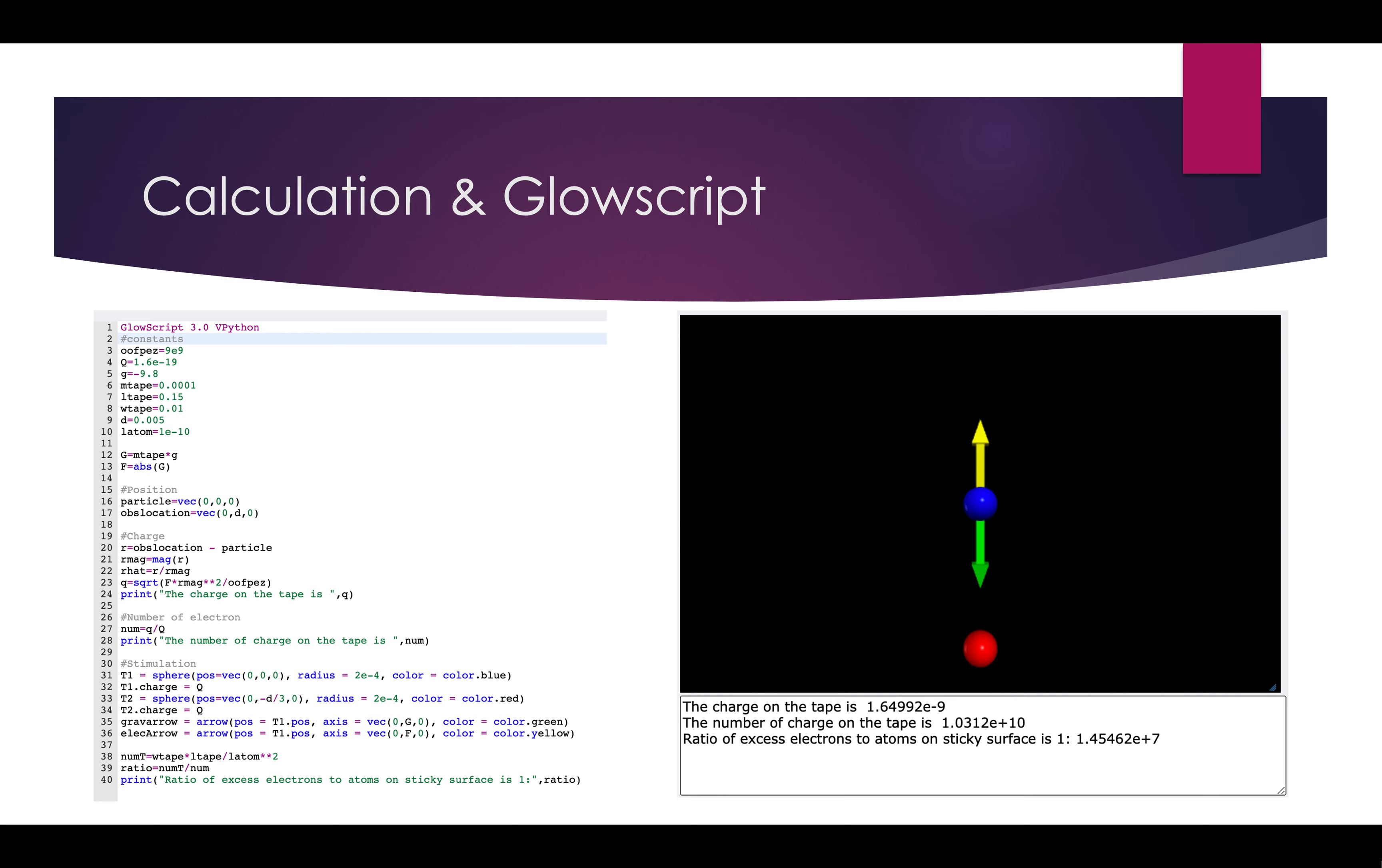The reason I use the position vector as 0 and negative D divided by 3 and 0 for T2 is because I want to make the two close to each other on the diagram to see them clearly. And the arrow pointing downward is gravity, pointing upward is the force. And we use the width of the tape times the length of the tape divided by the length of the atom squared to have the number of atoms on the tape. And then we use that to divide by the number of charges.